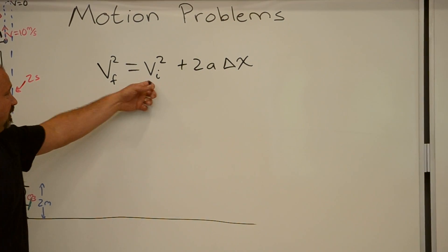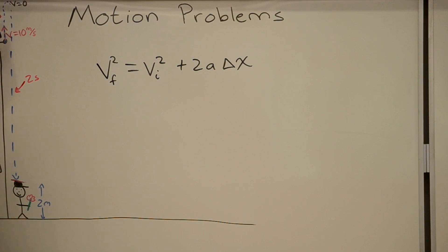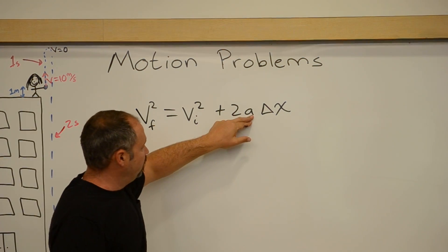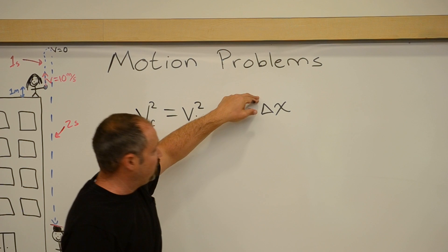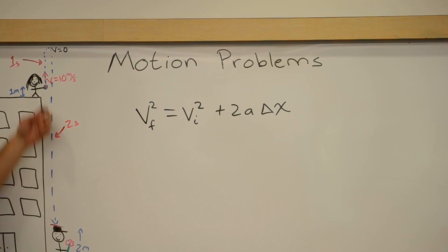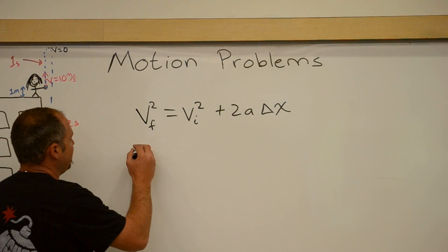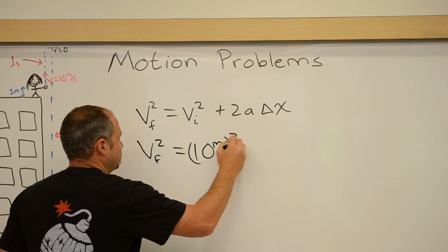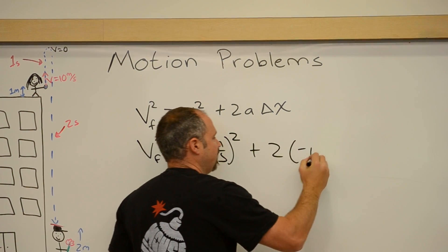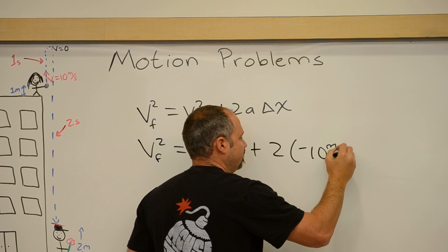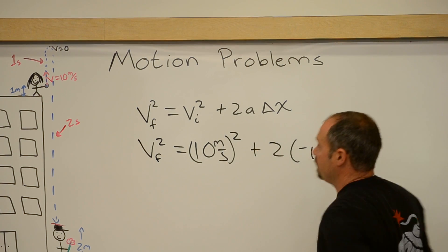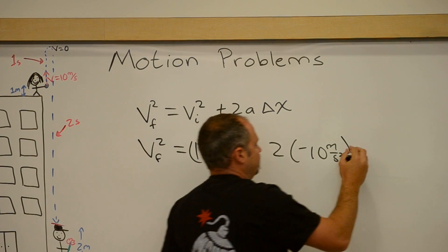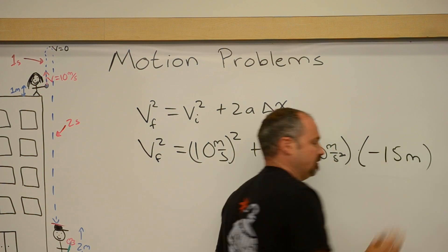We know the initial velocity starts off at 0 at the top, or 10 meters per second from her hand — you can take either case. I also know the acceleration of gravity, and I know the displacement of the balloon. Let's start right from her hand, so the initial velocity is 10 meters per second. The balloon starts at 17 and ends up at 2, so that's a displacement of negative 15 meters.